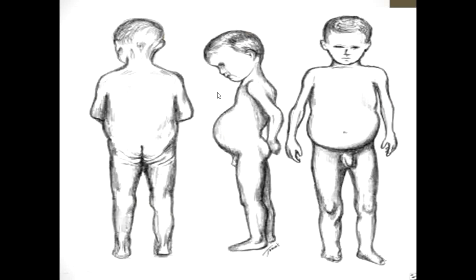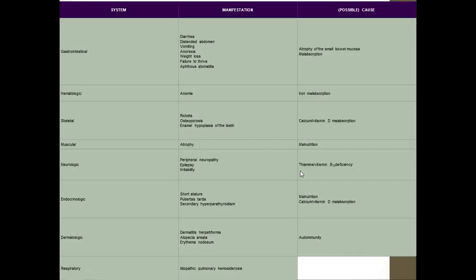This diagrammatic presentation of celiac disease patients shows marked abdominal distension, marked buttock wasting, and short stature. Almost every system is involved in celiac disease. In the gastrointestinal system, due to atrophy of the small bowel mucosa and malabsorption, there would be diarrhea, abdominal distension, vomiting, anorexia, weight loss, failure to thrive, and aphthous stomatitis.